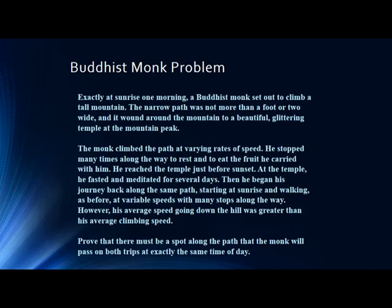So here's an example of one of the kinds of structured problems we're going to take a look at today. At exactly sunrise one morning, a Buddhist monk sets out to climb a tall mountain. The narrow path was not more than a foot or two wide and wound around the mountain to a glittering temple at the peak. The monk climbed at varying rates of speed, stopped many times to rest and eat fruit, and reached the temple just before sunset. After fasting and meditating for several days, he began his journey back along the same path, starting again at sunrise, walking at variable speed. His average speed going downhill is faster than his climbing speed. The task is to prove that there must be a spot along the path that the monk will pass on both trips at exactly the same time of day.